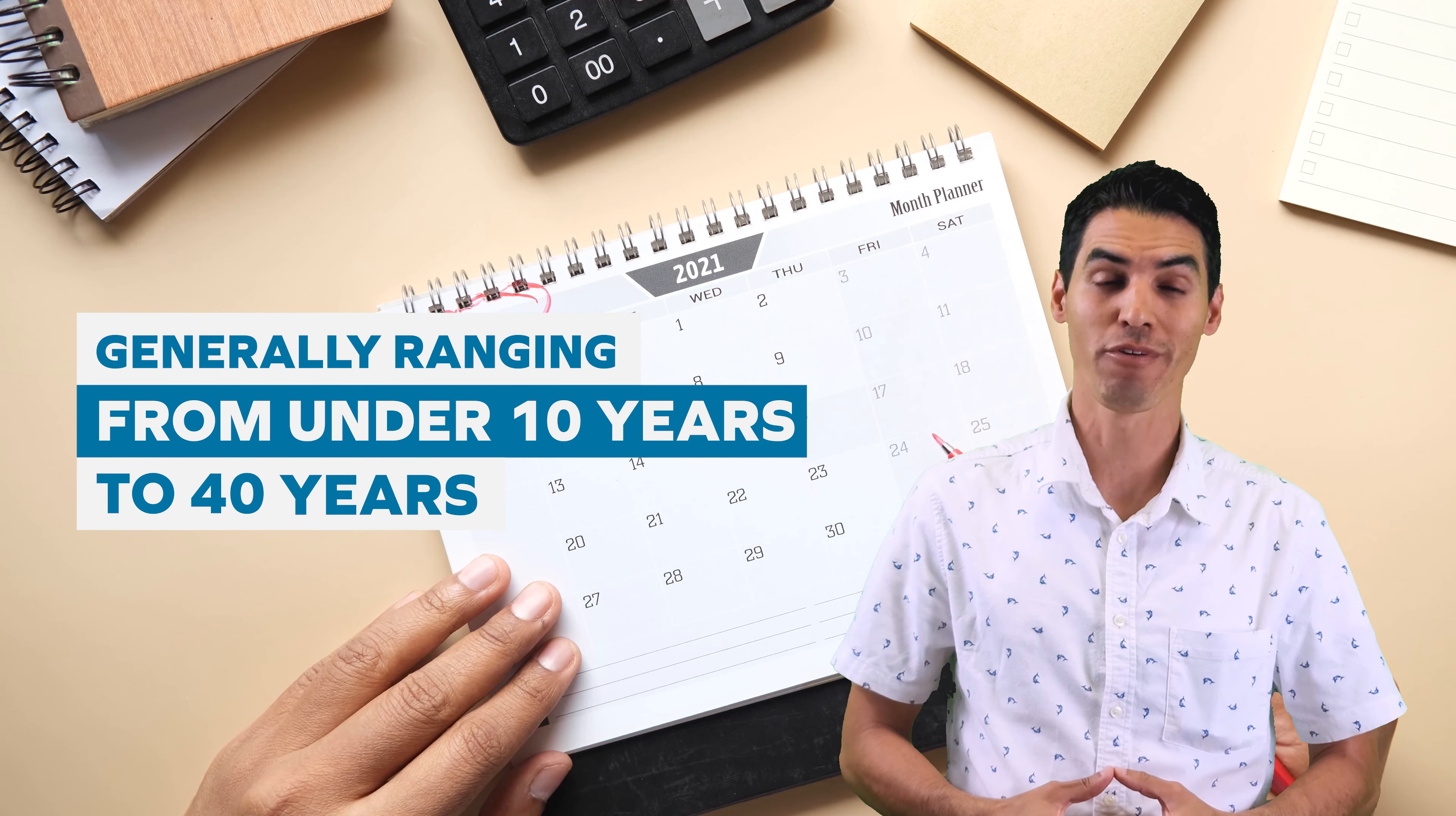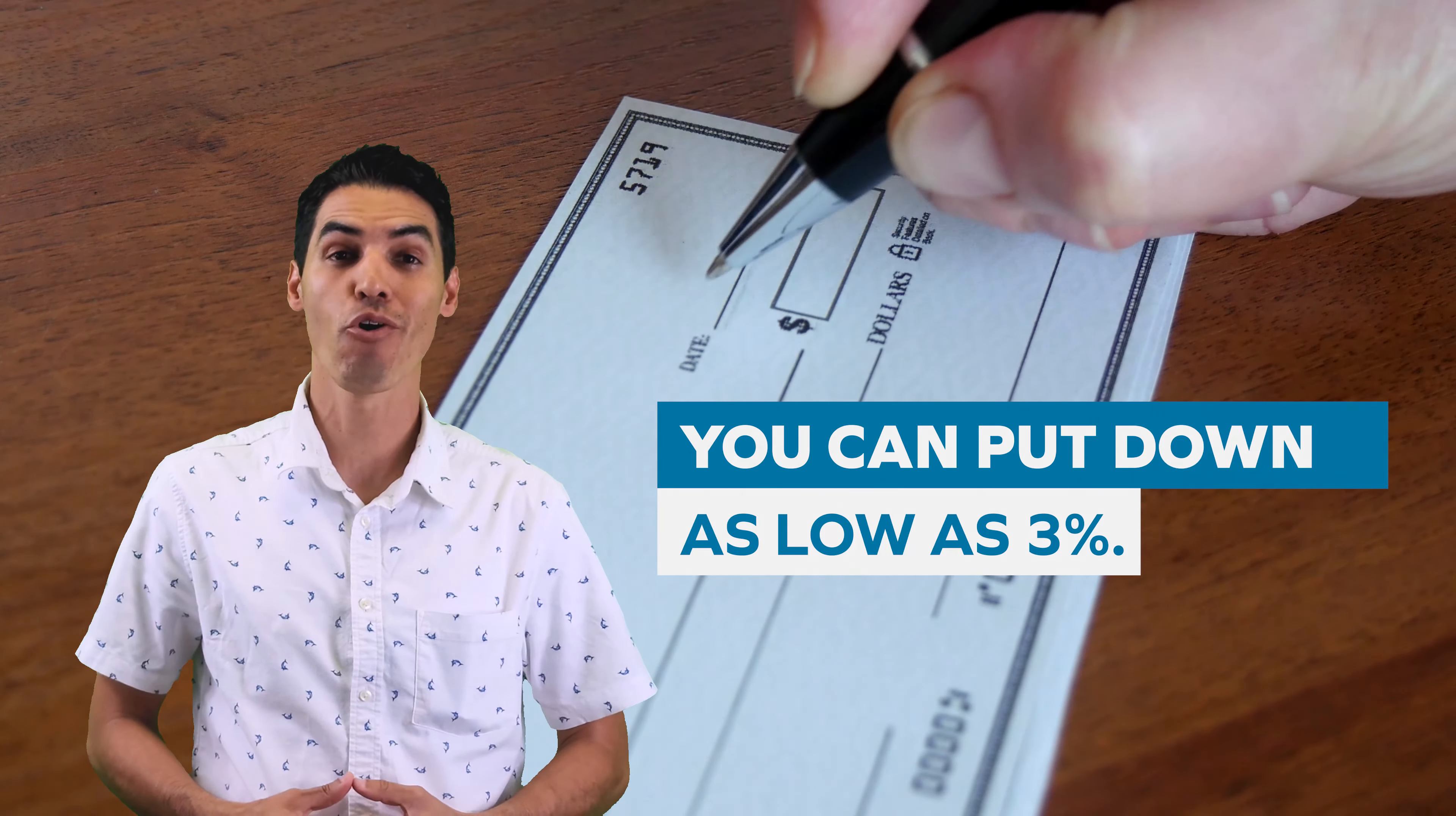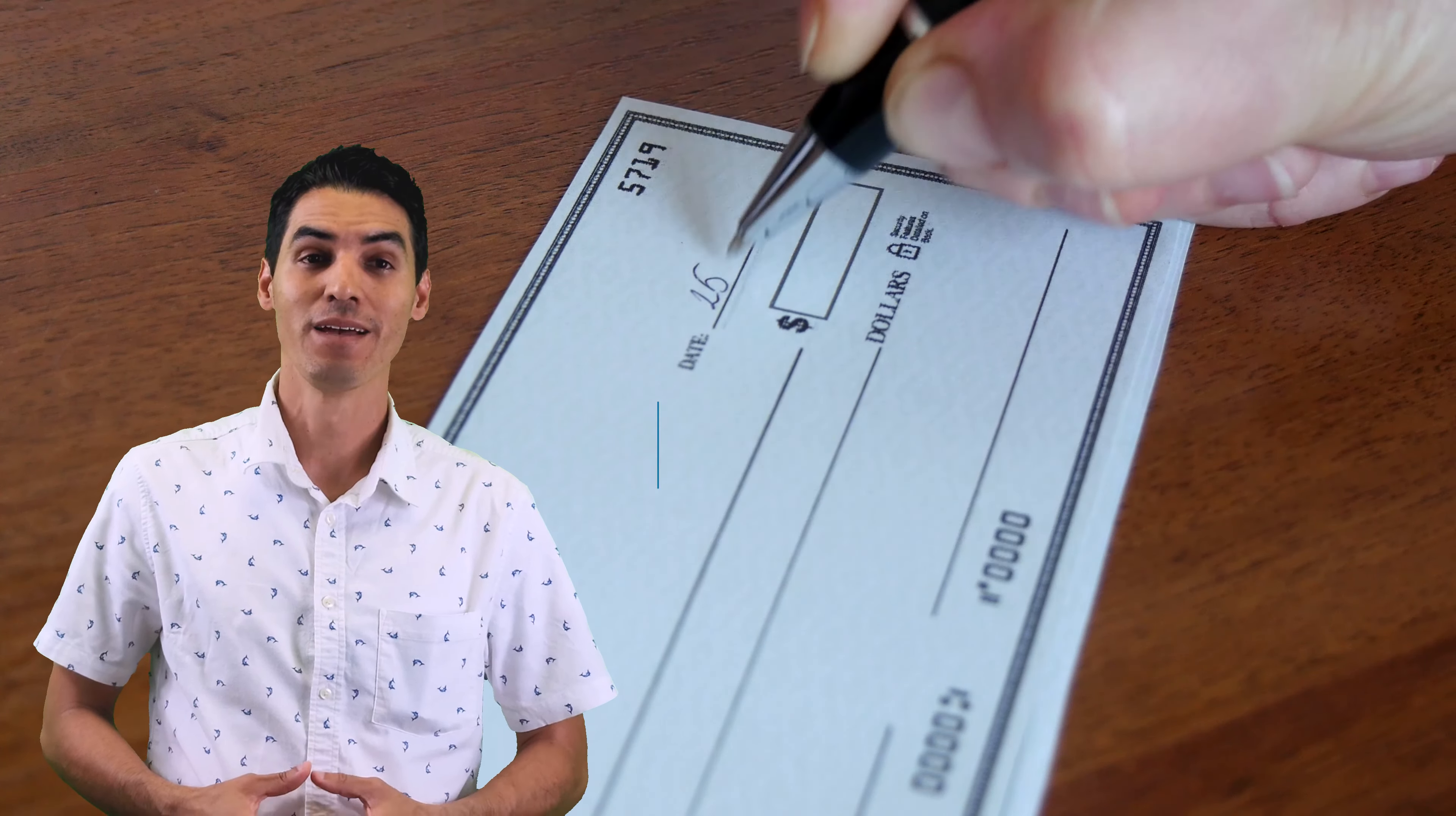Number four, down payment. Although most times a 20% down payment is the norm, a variety of different amounts are offered. You can put down as low as 3%, but the more that one puts down, the less your monthly payment will be.